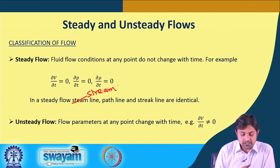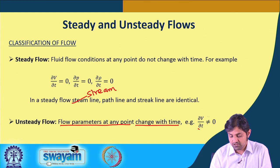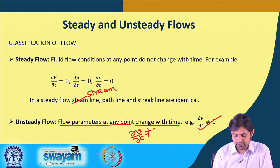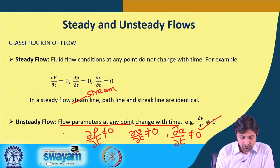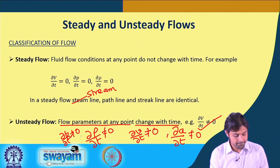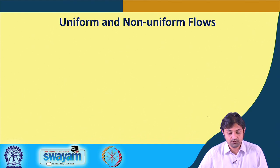In unsteady flow, unlike steady flow, the flow parameters at any point change with time. That is, ∂V/∂t ≠ 0, ∂ρ/∂t ≠ 0, and ∂p/∂t ≠ 0 — any of the flow properties can be changing with time.